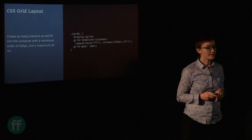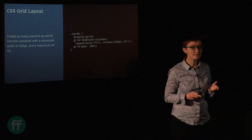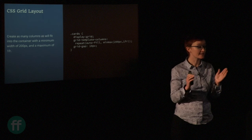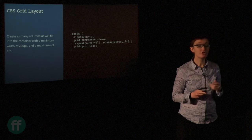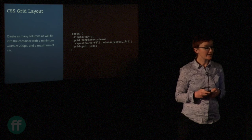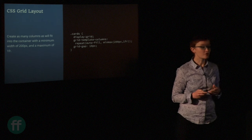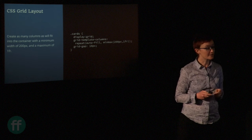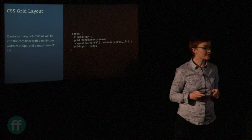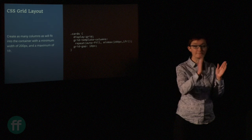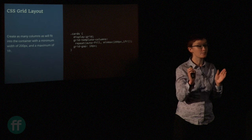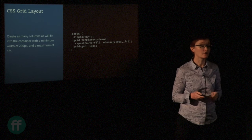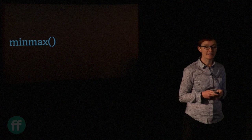The nice thing with flexbox is you can say flex-basis: 250px, and flexbox will fit as many items as will fit in the container, wrapping to the next line as needed. We can actually do that with grid because of the minmax() function. Here I'm saying grid-template-columns: auto-fill, with a minimum of 200px and a maximum of one fraction unit. So we can't go smaller than 200px — we'll get as many 200px columns as we can, and the leftover space is shared out. We get the ability to have as many columns as will fit, but with things lining up in their columns. minmax() is incredibly useful.